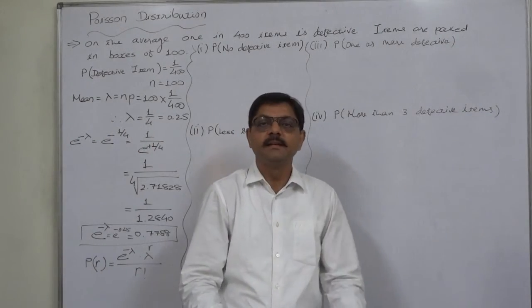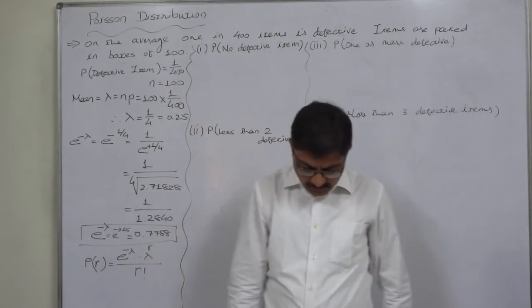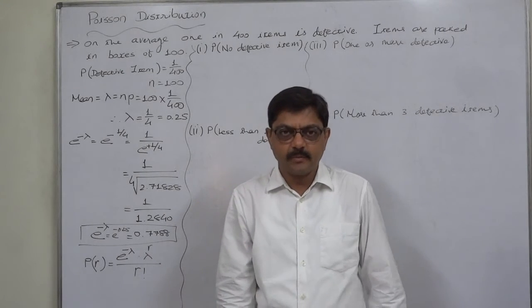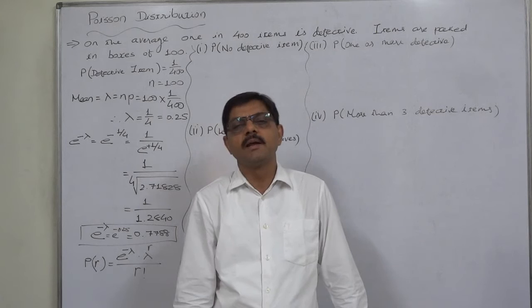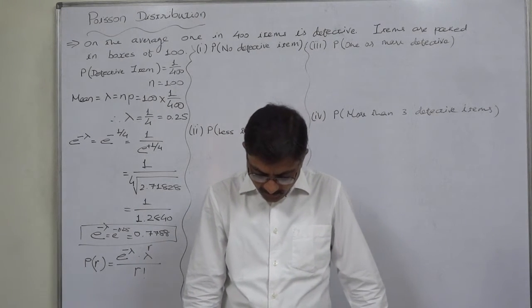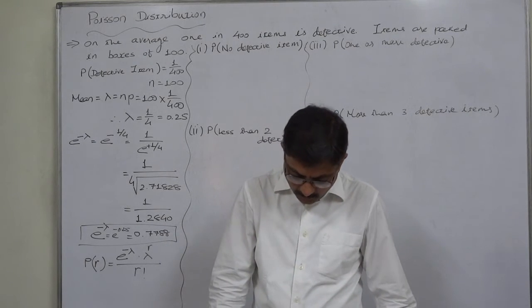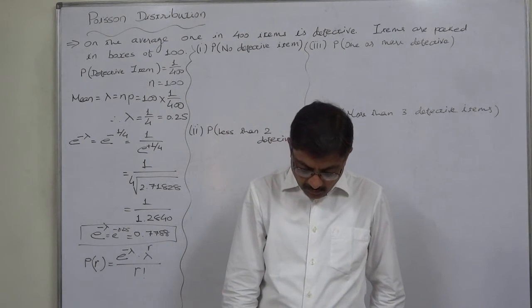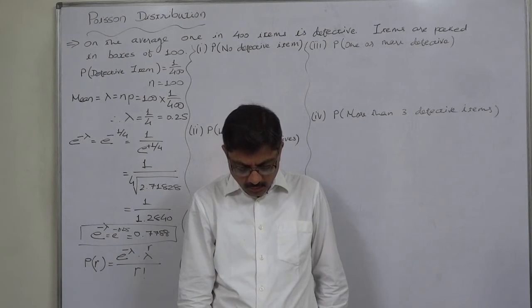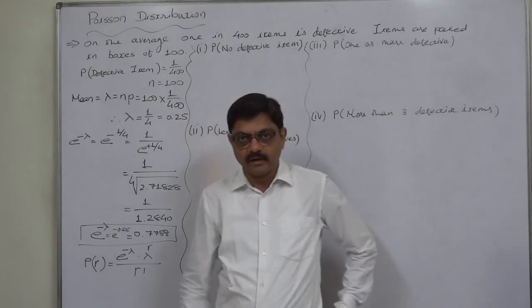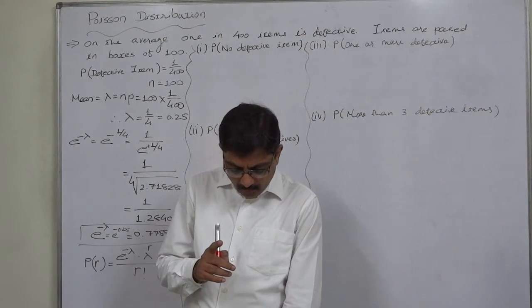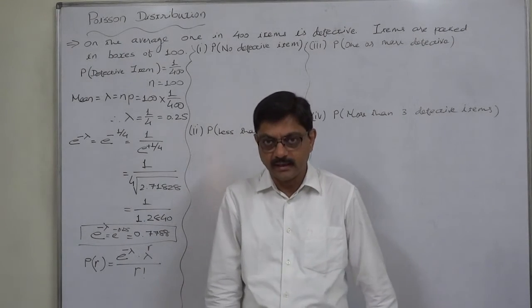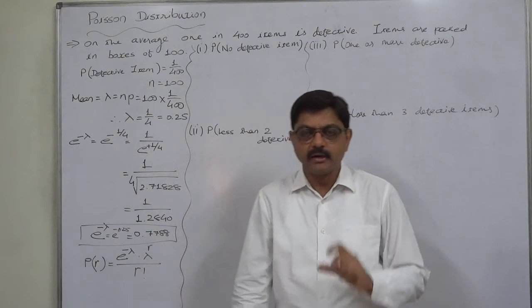Welcome to a new case in Poisson distribution. On average, 1 in 400 items is defective, which means the probability of any item being defective is 1/400. The items are packed in boxes of 100. We need to find the probability that any given box will contain: (1) no defectives, (2) less than two defectives, (3) one or more defectives, and (4) more than three defectives.